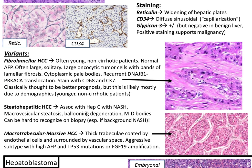Variants include fibrolamellar hepatocellular carcinoma. General demographics are young, non-cirrhotic patients with normal AFP. It's often large and solitary. Histologically, you'll have large oncocytic tumor cells with bands of lamellar fibrosis, cytoplasmic pale bodies, and recurrent DNAJB1-PRKACA translocation. It stains with CD68 and CK7. It's classically thought to have a better prognosis, but this is likely mostly due to demographics. Then there's steatohepatitic HCC, associated with hepatitis C and NASH, with histologic macrovesicular steatosis, ballooning degeneration, and Mallory-Denk bodies — which can be hard to recognize on biopsy, especially if there is background steatohepatitis.